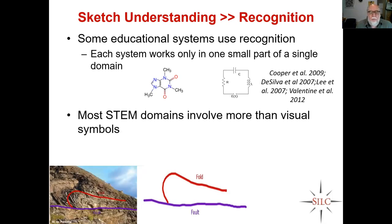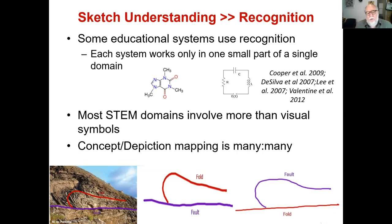That's kind of problematic. Because if you think about most STEM domains — geoscience being a wonderful example — most STEM domains involve more than just abstract visual symbols. This is a full fault, and you'll see that someone has inked them up on top of the photograph, which is a fairly common exercise. The shape of those things isn't something you would recognize per se — there are lots of things that have those shapes. The mapping between concepts and how they're depicted is many to many. That means recognition can never, ever work at scale in STEM domains.